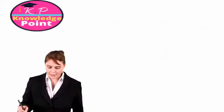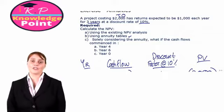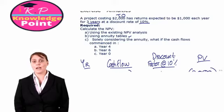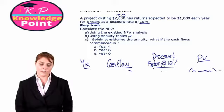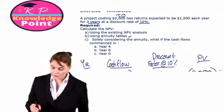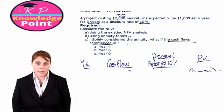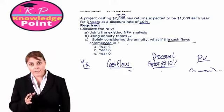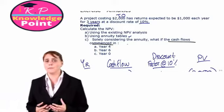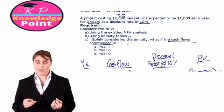Things can get a little tricky in annuity questions. We have assumed our first cash inflow is one year from now, but what if it isn't received for a number of years into the future? Part C asks: solely considering the annuity, what if the cash flows commenced in year 4? It's useful for these questions to draw a timeline to make sure you understand what is going on.